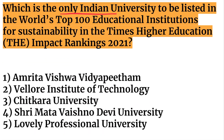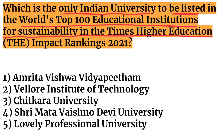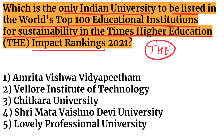Which is the only Indian university listed in the world's top 100 educational institutes for sustainability in the Times Higher Education Impact Ranking 2021? The answer is Amrita Vishwa Vidyapeetham.